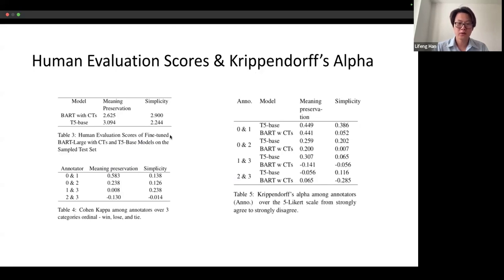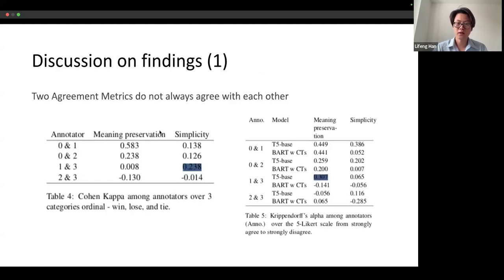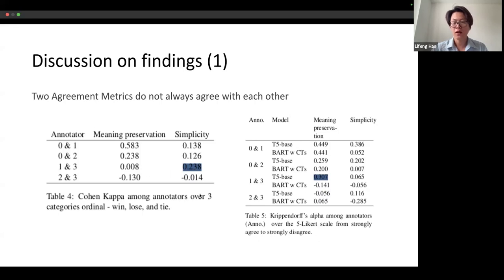From the human evaluation output, we can see that BART with control mechanisms has much higher simplicity output than T5-base. However, T5-base has better meaning preservation than BART with control token mechanisms. We also observed that the two agreement metrics — Cohen's kappa and Krippendorff's alpha — do not always agree with each other. For example, regarding annotators 1 and 3, Cohen's kappa indicates they have better simplicity agreement than meaning preservation, while Krippendorff's alpha supported the opposite.